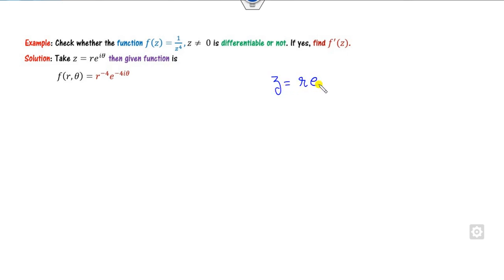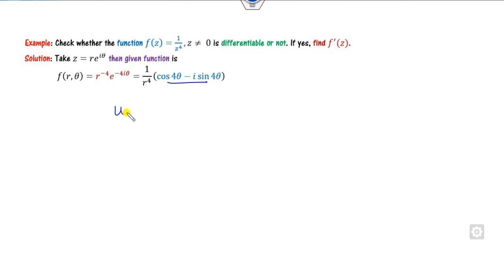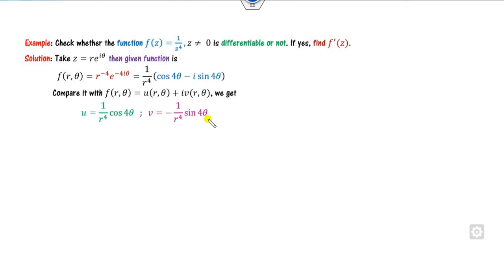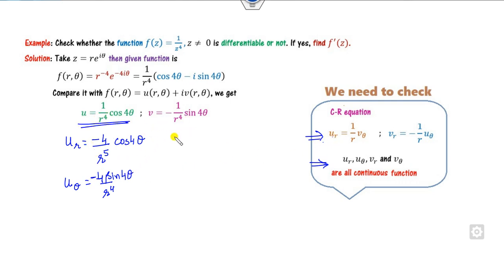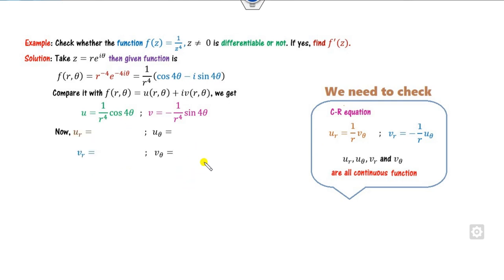In polar form, f(z) equals 1 over z^4 becomes 1 over r^4 e^(4i theta), which equals (1/r^4) e^(minus 4i theta). Converting to sine and cosine: u equals (1/r^4) cos(4 theta) and v equals minus (1/r^4) sin(4 theta). Now we find the four partial derivatives. The partial derivative of u with respect to r gives one expression, and the partial derivative of u with respect to theta, where 1/r^4 is treated as constant and cosine differentiates to minus sine of 4 theta times 4.